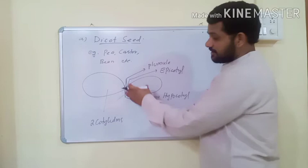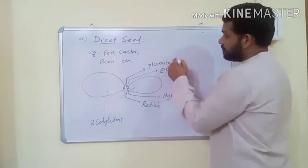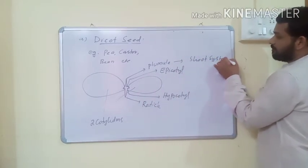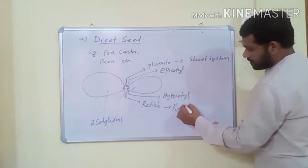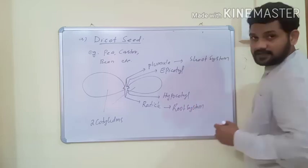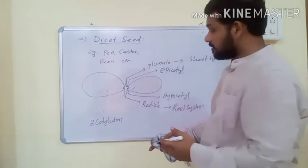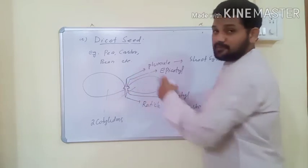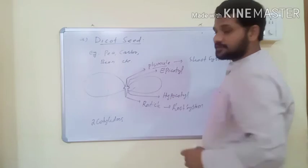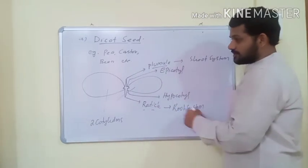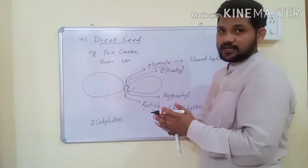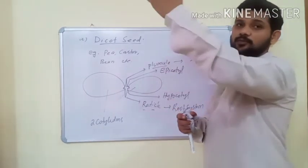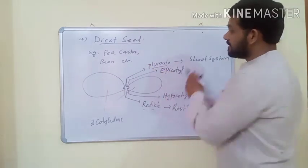After germination, the embryo inside develops further. The plumule portion of the embryo is transferred into the shoot system, and the radicle develops into the root system - the primary root is an elongation of the radicle. The cotyledons store food material which is totally consumed during germination; after that the shoot system produces leaves, which make food through photosynthesis. This completes the structure of the dicot seed.